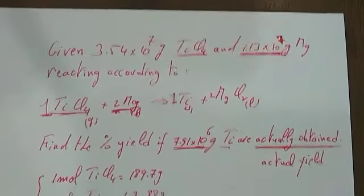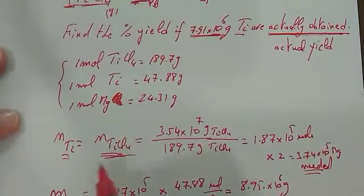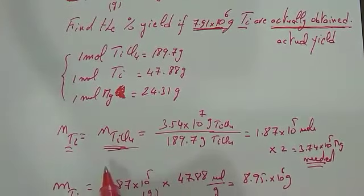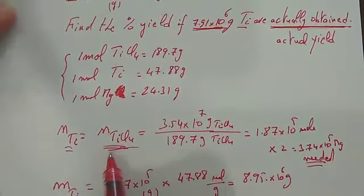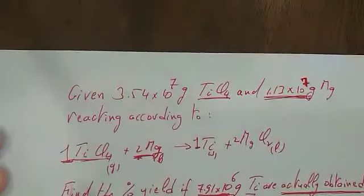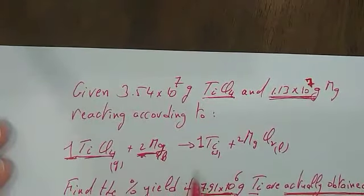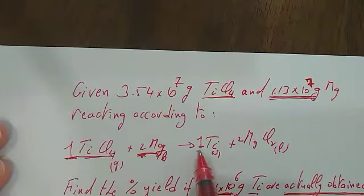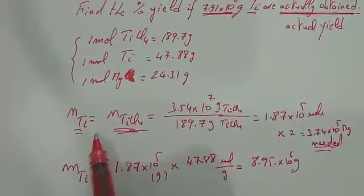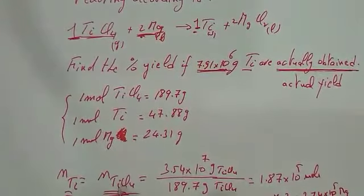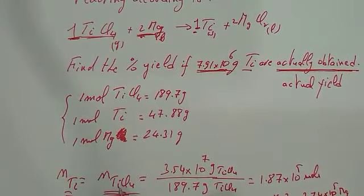Let's compute the number of moles of TiCl4. We can also compute the number of moles of magnesium. The number of moles of Ti equals the number of moles of TiCl4 if the reaction goes to completion according to the stoichiometric coefficient. See, one to one. So the number of moles of titanium produced should equal the number of moles of TiCl4 reacted theoretically.